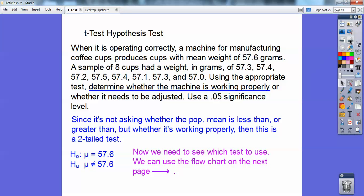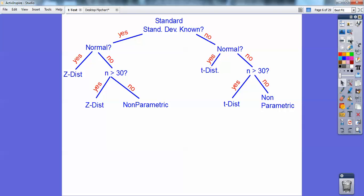Now we need to see which test to use. We can use the flowchart that's on the next page. Is the standard deviation known? If it is known, then we go down the z-test distribution. If it's normal, we can use the z-test. If it's not normal, then is the sample size greater than 30?